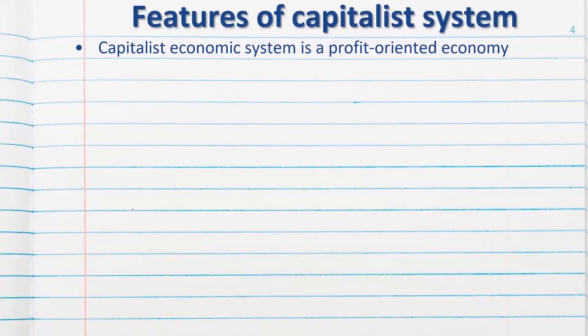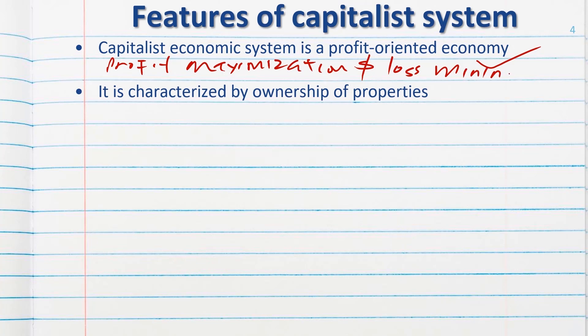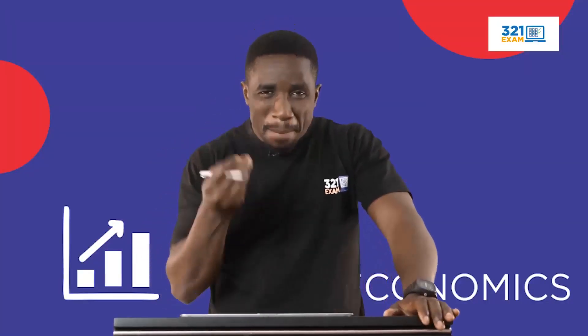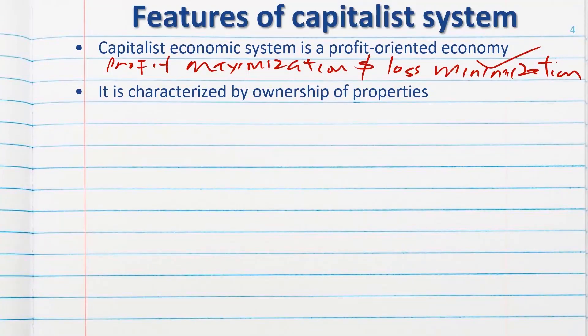What are the basic features of a capitalist economy? Number one, the capitalist economy system is a profit-oriented economy. The major essence of people going into production in that system is for profit maximization and loss minimization.